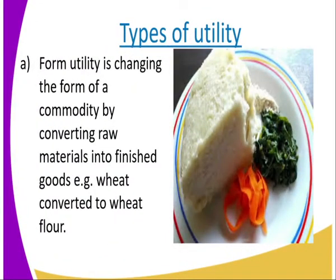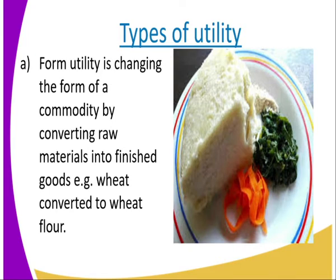Let us start by looking at form utility. Form utility is changing the form of a commodity by converting raw materials into finished goods. For example, wheat is converted into wheat flour — that is form utility. When flour is cooked and made ready for consumption, that is also form utility, because you have changed the form from flour into a finished commodity that you can eat.